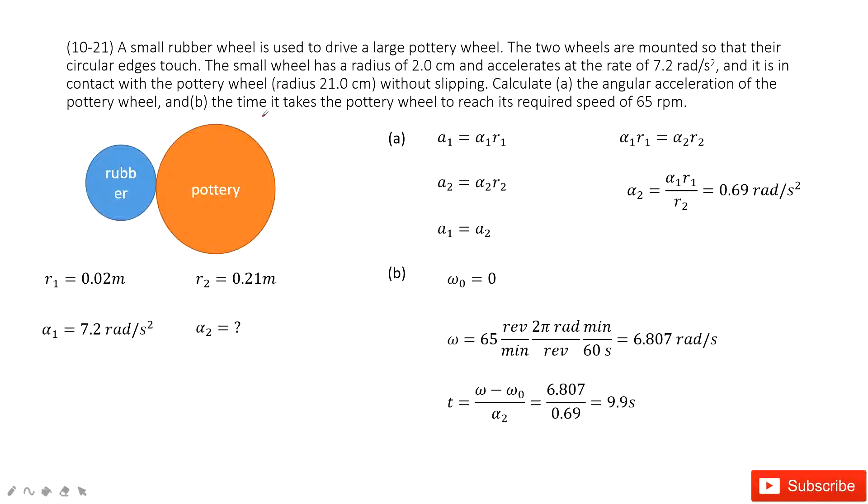In this system, you can see we have two large circles. One is rubber, one is pottery, and they just touch at the edge for each circle. Now we know the radius for the rubber, the radius for the pottery, and the circular acceleration for the rubber, and then we need to know the circular acceleration for this pottery circle. How can you solve the problem?